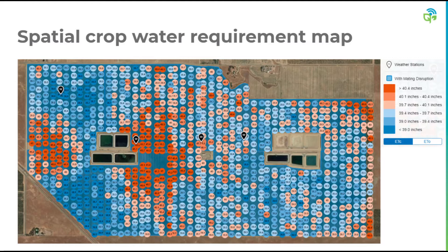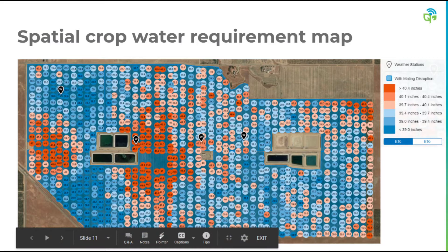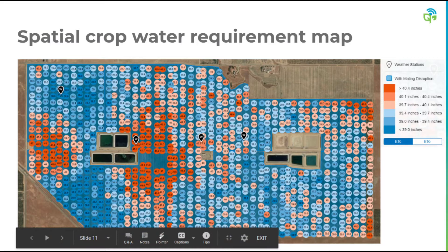In addition to providing site-specific ET data, we can also generate spatial crop water requirement maps, such as the one you see in the image here. Each one of these dots on the map is represented by a mating disruption pheromone aerosol dispenser. In addition to dispensing pheromones, each one of these units also measures temperature as well as relative humidity. It's with these high-density sensors on a per-block basis that allows us to create these types of visuals. The map here is looking at an entire growing season's worth of crop water demands for several almond blocks.